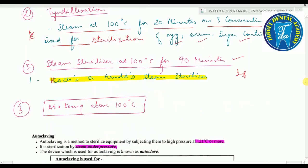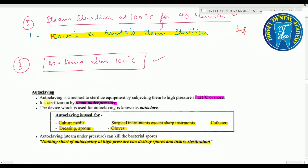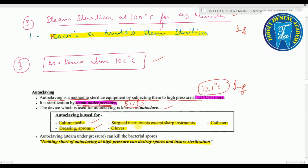At temperature above 100°C, you use the autoclave. Autoclaving sterilizes equipment by subjecting them to high pressure steam at 121°C — sterilization by steam under pressure. The autoclave is used for culture media, dressings and aprons, surgical instruments except sharp instruments, gloves, and catheters. Autoclaving under high pressure can kill bacterial spores — nothing short of autoclaving can destroy spores and ensure sterilization.